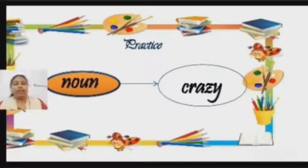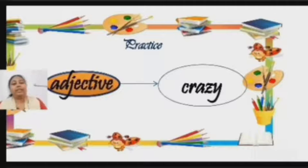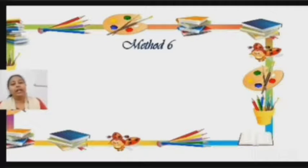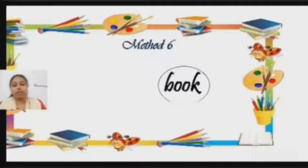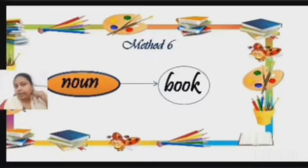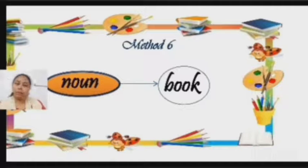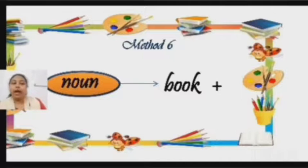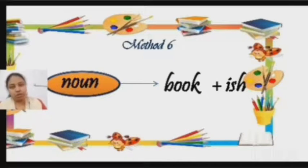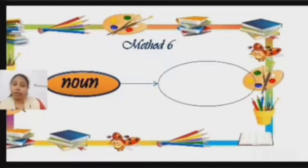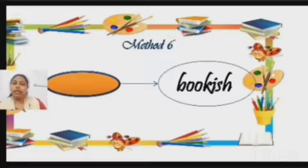Let us see the sixth and the last method of changing nouns into adjectives. The next word we are going to take is 'book', which is a noun. We are going to add to this word '-ish', and the new word formed is 'bookish', which is an adjective.